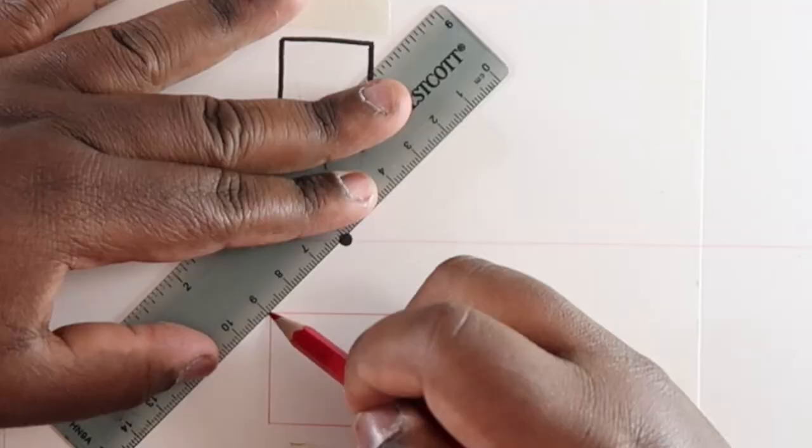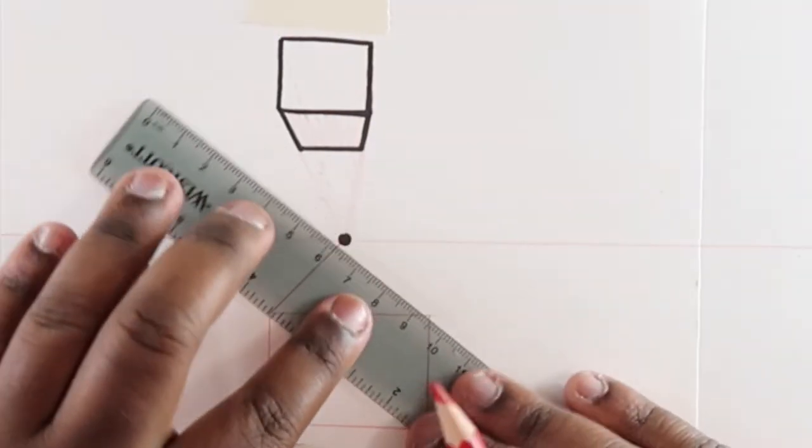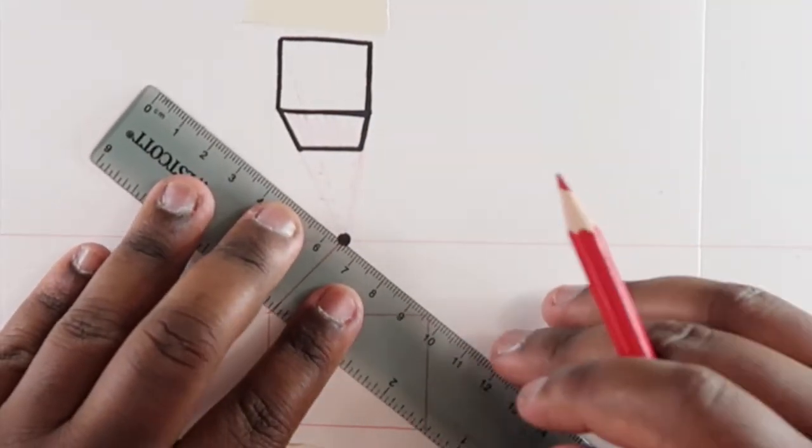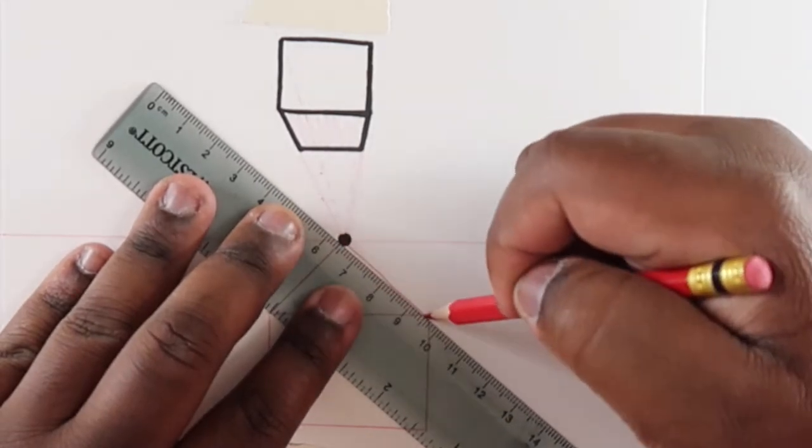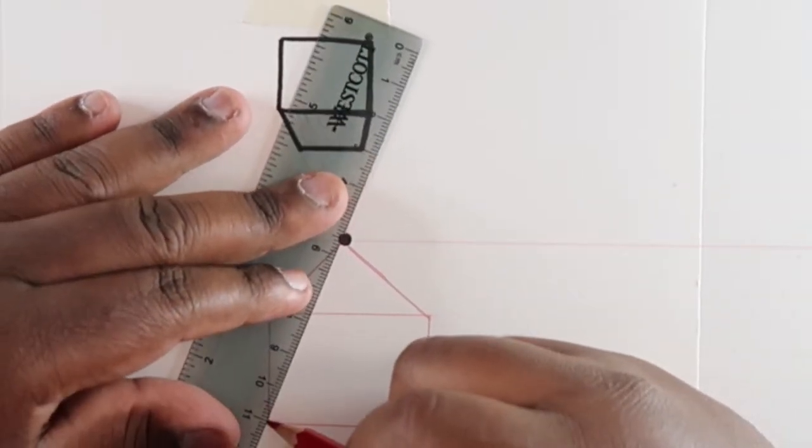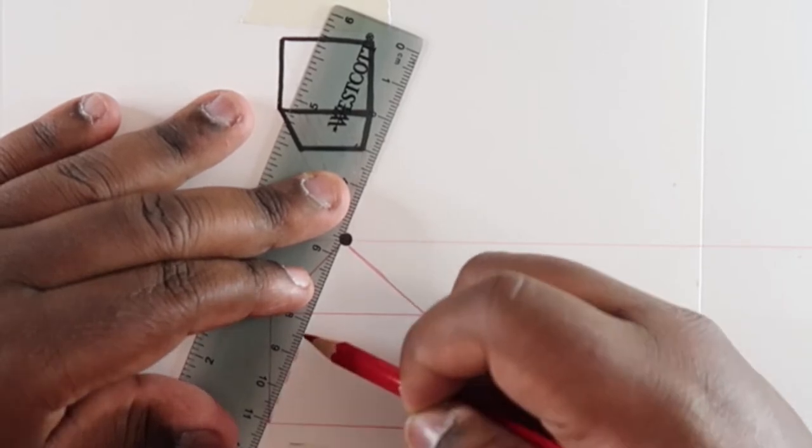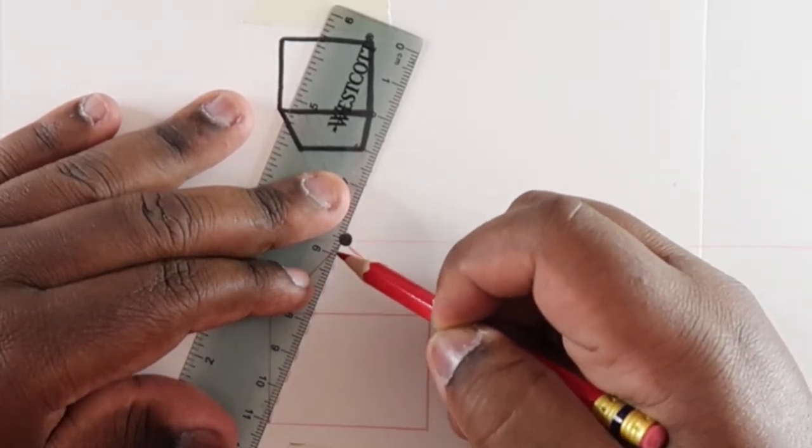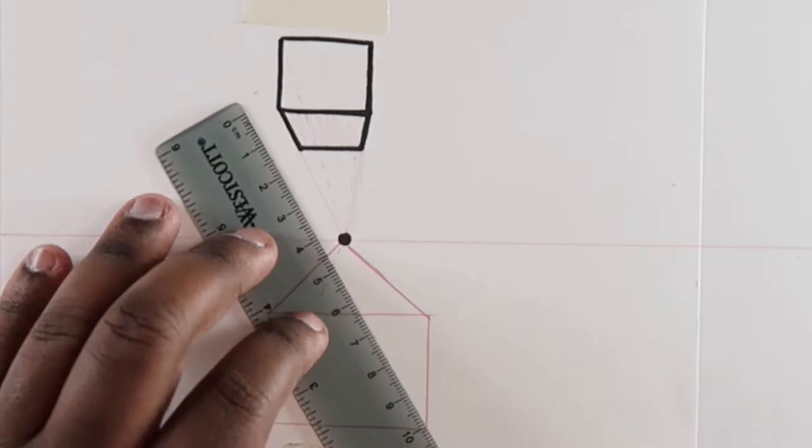And then connect each corner to this, our vanishing point. And then for the ones we won't see, I'm going to just make them dotted. You don't have to, but just for the purposes of this video.